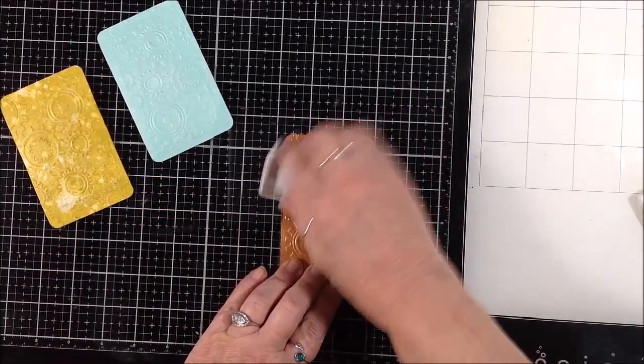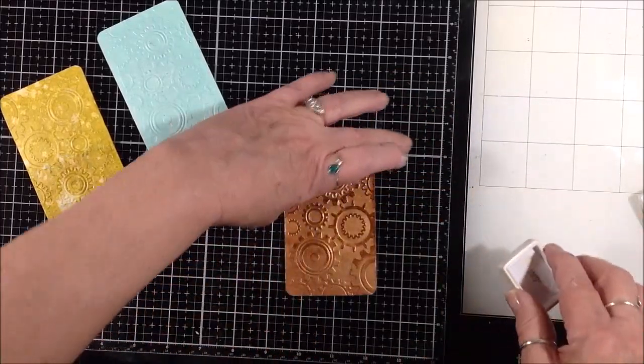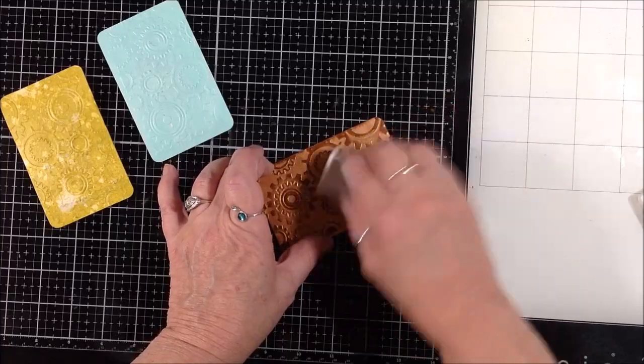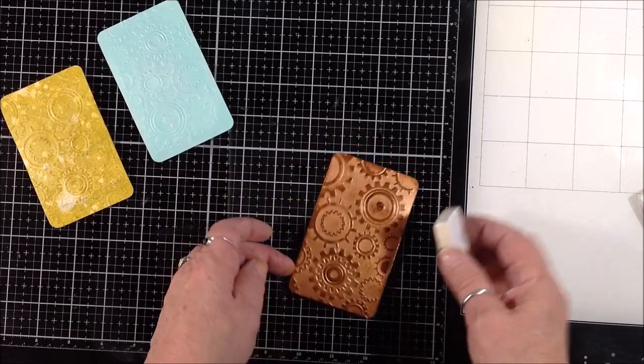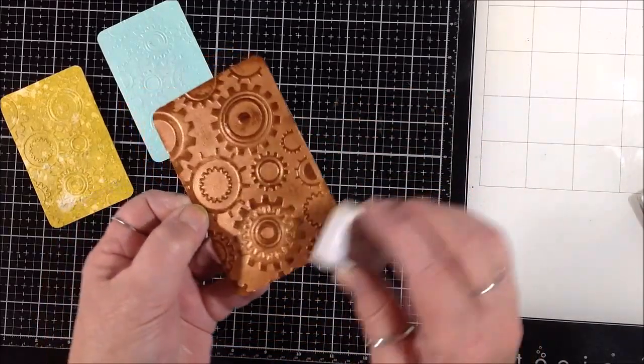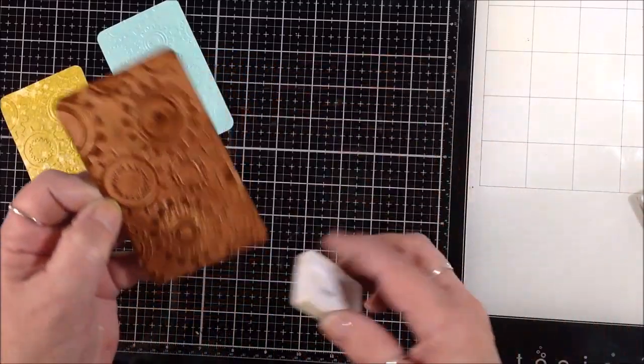I have some archival ink in potting soil and I'm just hitting the embossing on that copper card to bring the texture forward more. I really like the way that looks with the brown on top of the copper. I think it's really pretty and then just kind of hit the edges with it too.